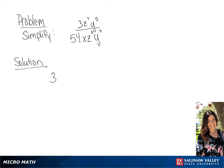We have 3z to the 7th, y to the 5th, all over 54, xz cubed, y squared.